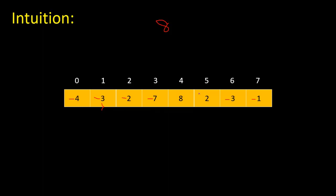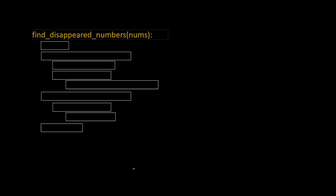Now we're left with two positive integers. This means two elements disappeared from this array. The missing values are index plus one for each positive integer: four plus one is five, and five plus one is six. So five and six are our result — that's what we need to return. That's how we solve this problem.